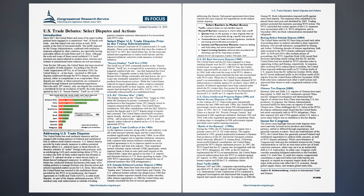Over the last 100 years, the United States has been involved in a number of trade disputes. According to the World Trade Organization (WTO), as of December 2020, the United States is, or has been, involved in 280 trade disputes addressed through the WTO dispute settlement system, either as complainant or as a respondent. Most disputes are settled, or when unresolved, are contained or diffused through bilateral and multilateral negotiations. Since the early 20th century, only one dispute has resulted in a worldwide tit-for-tat escalation of tariffs: the trade dispute ignited by the U.S. Smoot-Hawley Tariff Act of 1930.